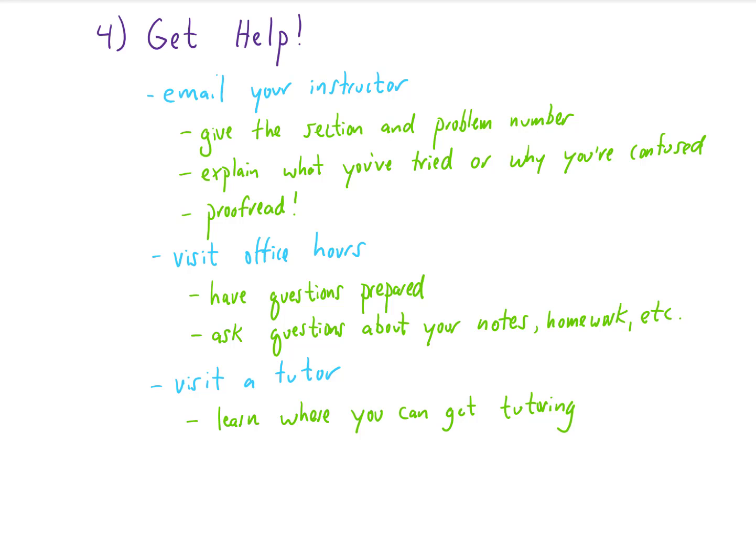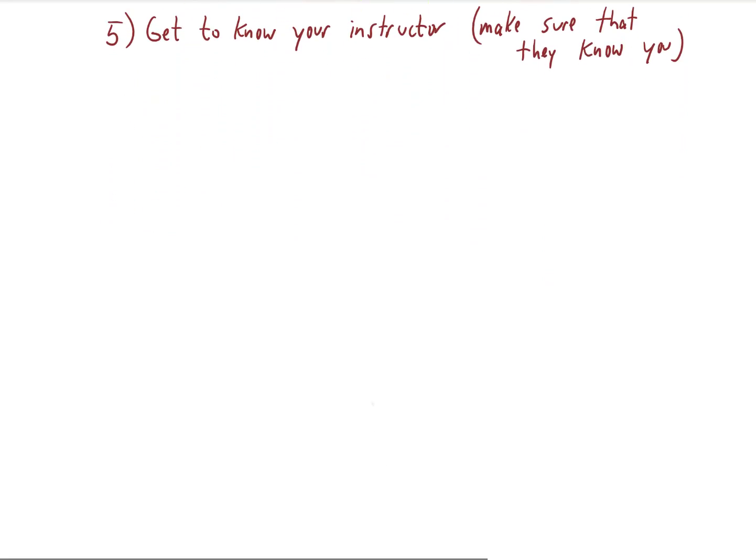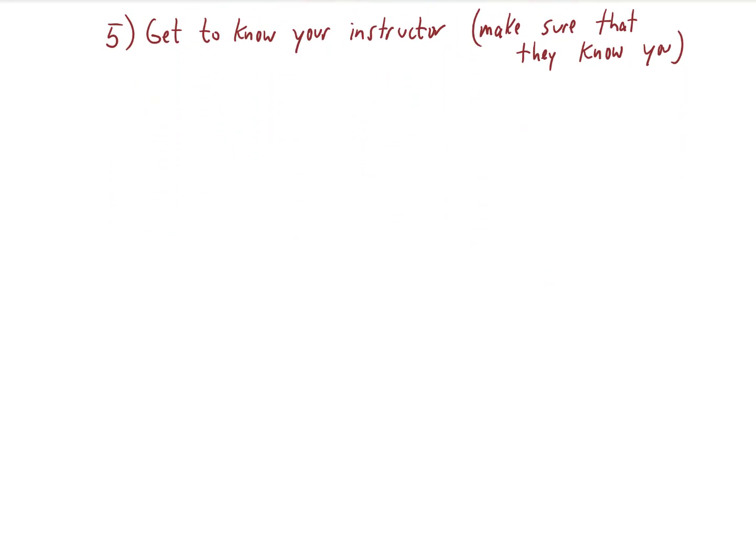My last bonus tip for how to succeed in the math course is something that I definitely didn't do a good job of when I was a student. It's get to know your instructor, or more specifically, make sure that they know who you are. It is best if you are not just a random anonymous student in the eyes of your instructor, and there are a lot of ways to do this. Of course, as I previously mentioned, going to your instructor's office hours is one way, but don't be afraid to stand out a little bit. If you sit in the front row of your class, your instructor will definitely notice you.